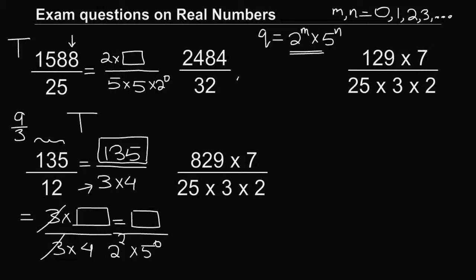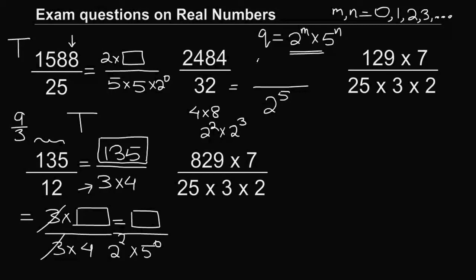For the third question, the denominator is 32, which can be written as 4 times 8, that is 2^2 times 2^3, which equals 2^5. The denominator is in the required form. So clearly we know this decimal expansion will terminate.